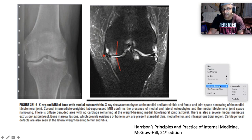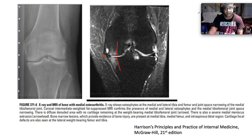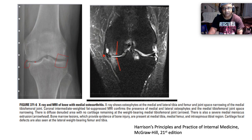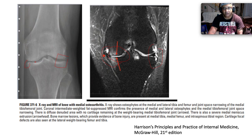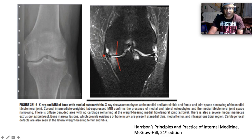An X-ray from Harrison's shows OA at the knee with beautiful osteophytes at the medial and lateral tibia and femur and joint space narrowing of the medial tibial-femoral joint. A coronal intermediate-weighted fat-suppressed MRI confirms medial and lateral osteophytes and medial tibial-femoral joint space narrowing, with a diffuse denuded area showing no cartilage remaining at the weight-bearing medial tibial-femoral joint. There is also severe medial meniscus extrusion and cartilage focal deficits at the lateral weight-bearing femur and tibia.